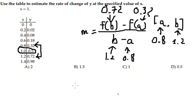So we can find m equals 0.72 minus 0.32 over 1.2 minus 0.8.